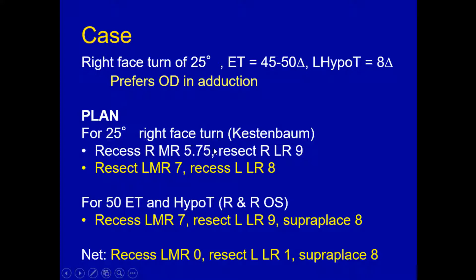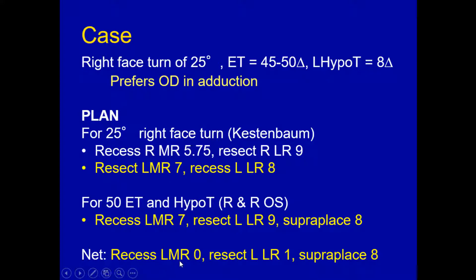I cannot correct the esotropia with the right eye — I have to correct it with the left eye. For a 25-degree right face turn, using my Kestenbaum-Anderson table, I perform right medial rectus resection, right lateral rectus recession, and corresponding procedures on the left eye. For the esotropia of 50 prism diopters and left hypotropia of 8 prism diopters, I recess the left medial rectus 7 mm, resect the left lateral rectus 9 mm, and superplace both 8 mm — about three-quarters of a tendon width. Adding the Kestenbaum component and the strabismus correction together, we end up with a left medial rectus recession of 0 mm, a resection of the left lateral rectus of 1 mm, and superplacement of both 8 mm.